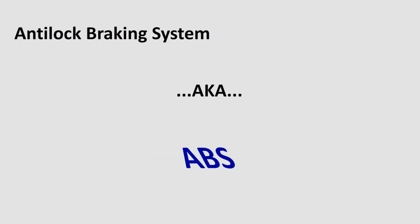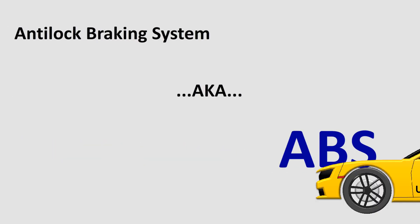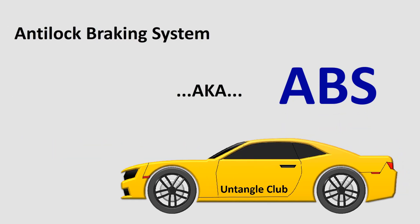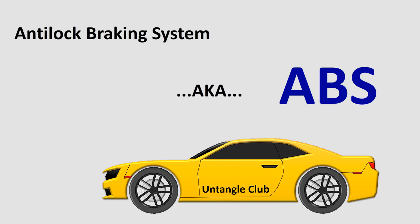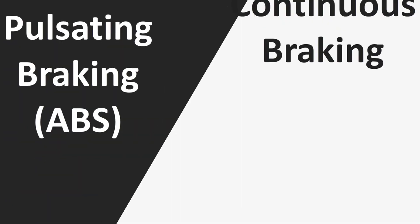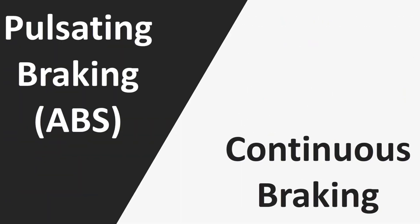Anti-lock braking system, aka ABS, is a braking system which applies brakes in a pulsating manner to avoid skidding and stop your vehicle in a shorter distance. But how come pulsating braking is more effective than a continuous one? Let's untangle that in this video.